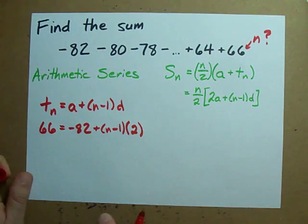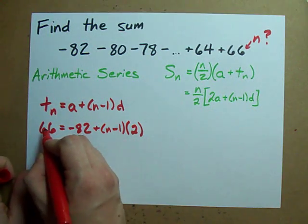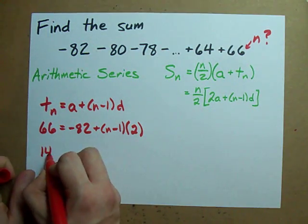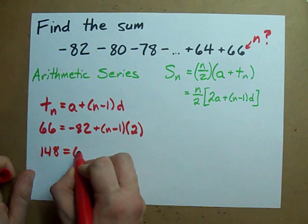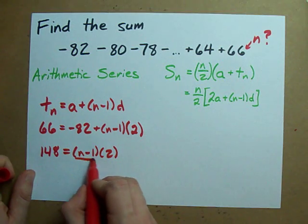How do you solve for n? Well, you move the 82 to the other side. You add 82 to the left side. How do you undo this multiplication by 2?